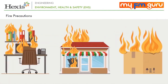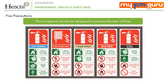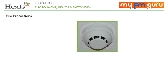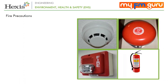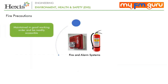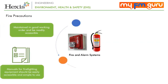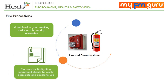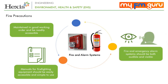Fires can cause havoc to life and property, so occupants should know the position of fire alarms, extinguishers and all exits of the buildings in which they work. The workplace should be designed to prevent the start of fires and fire codes applicable to industrial or commercial buildings should be properly implemented. The workplace should be equipped with fire detectors, alarm systems and fire fighting equipment in adequate numbers. These equipment should be maintained in good working order and be readily accessible. Fire and emergency alarm systems should be both audible and visible.